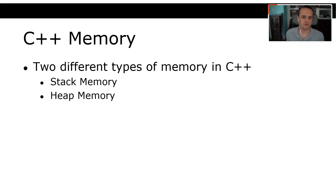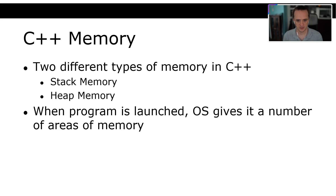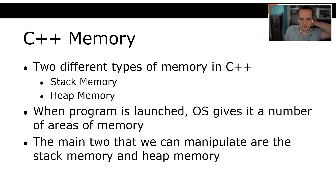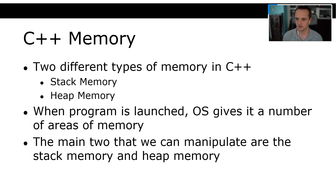There are two abstract types of memory in terms of how we allocate it in C++: stack memory and heap memory. When a program written in C++ is launched, the operating system gives it a number of areas of memory to operate with. The main two we can manipulate are stack memory and heap memory, and there are a bunch of differences between them.